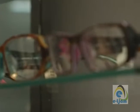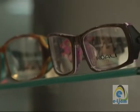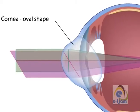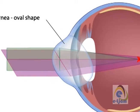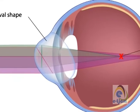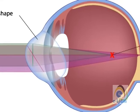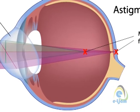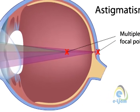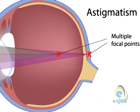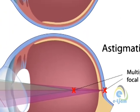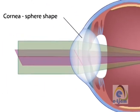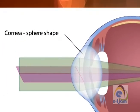Another common eye defect is astigmatism, which causes difficulty in seeing fine details. Astigmatism is caused by an irregularly shaped cornea or lens, so that light rays focus at different planes at different points. Astigmatism can be corrected by using a lens that has different radii of curvature in different planes.